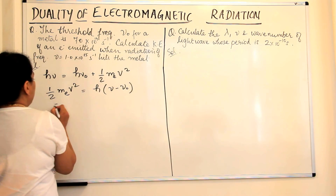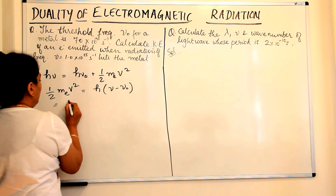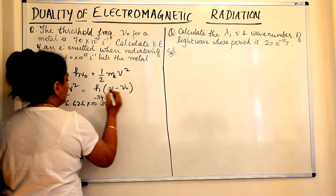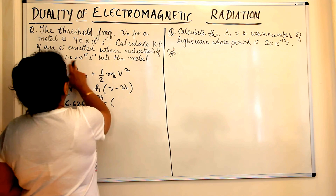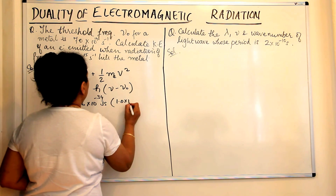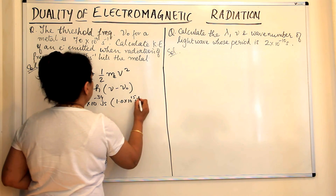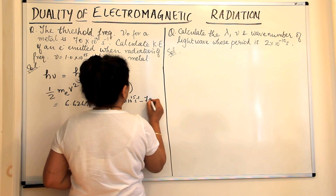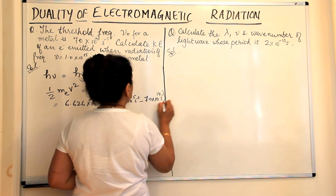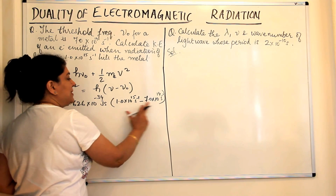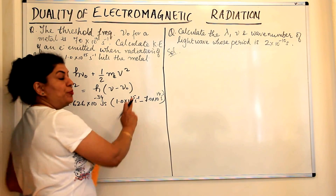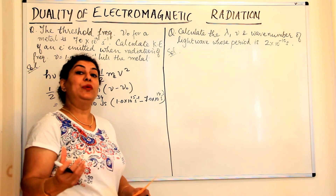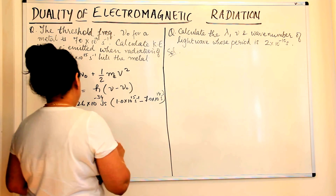Let us now substitute the values. h is Planck's constant, which is equal to 6.626 × 10⁻³⁴ joule·second. ν is given as 1.0 × 10¹⁵ per second minus 7.0 × 10¹⁴ per second. Now, since the exponents are different — 10¹⁵ and 10¹⁴ — we can carry out calculations only if both powers are the same.